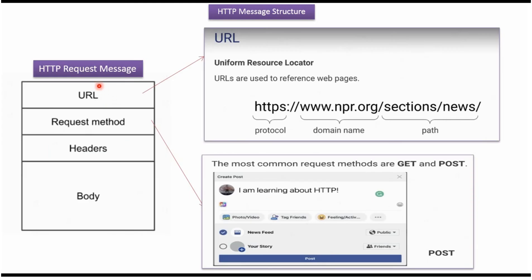Here you can see the structure of an HTTP request message. It has four sections. The first one is URL, which is the address of the server. The second one is request method, the third one is headers, and the fourth one is body.